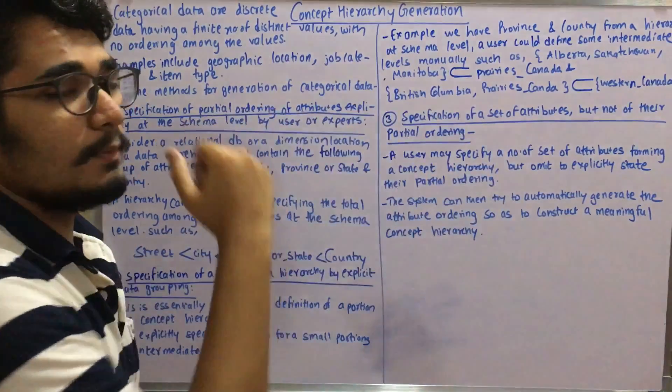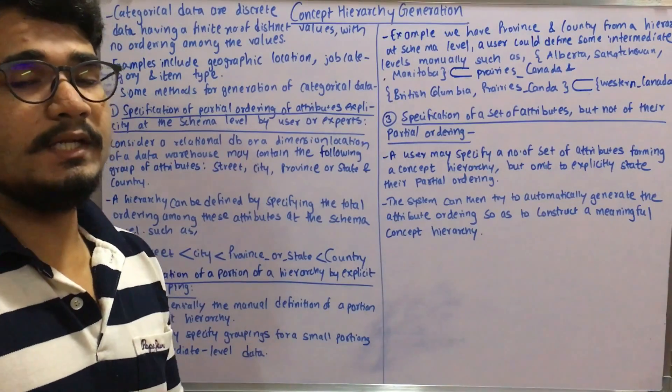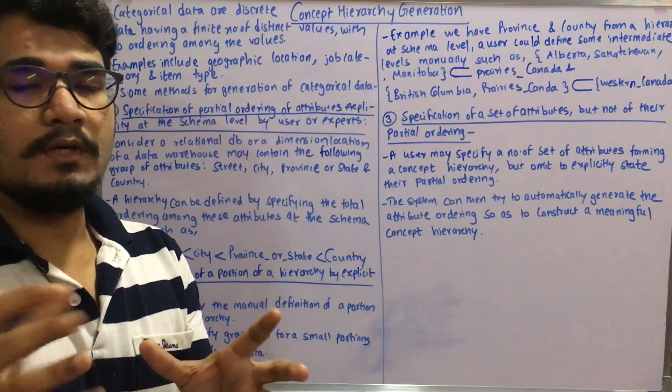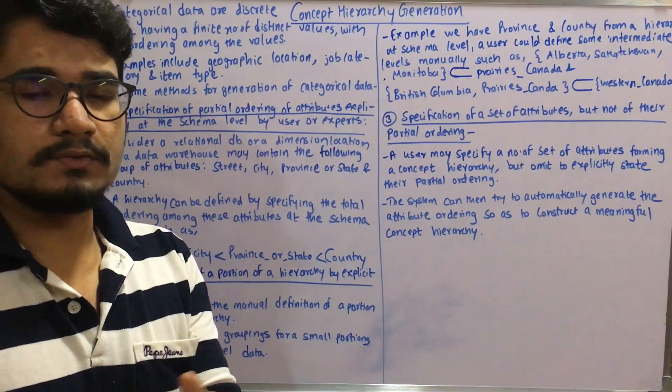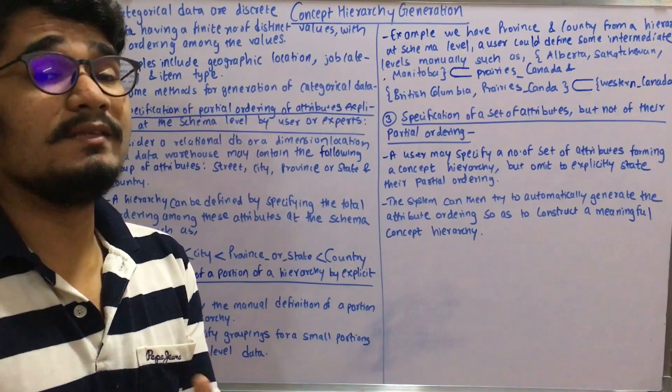A user may specify a set of attributes forming a concept hierarchy but omit explicitly the partial ordering. The system has to automatically generate or auto-suggest, like in Microsoft Word when it automatically suggests spell errors or grammar errors.